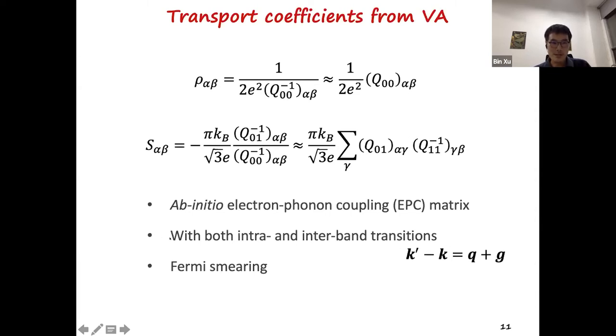The variational approach allows us to further derive the transport coefficients, such as the resistivity and Seebeck, in terms of the scattering operators. And in our approach, we consider both the intra- and inter-band transitions, and we also consider the Fermi-smearing effect, because without the Fermi-smearing effects, we can still calculate the resistivity, but the Seebeck coefficient will be zero.